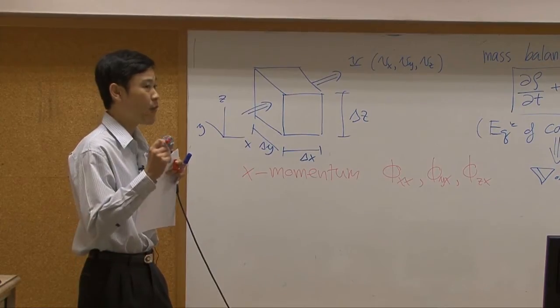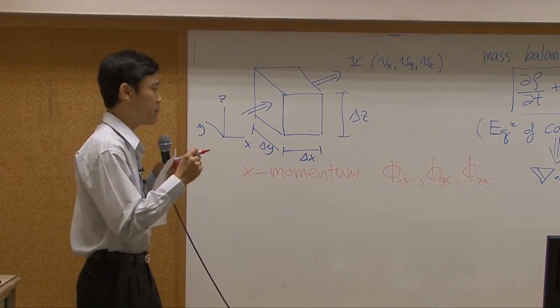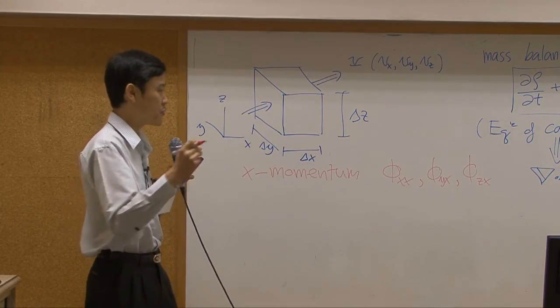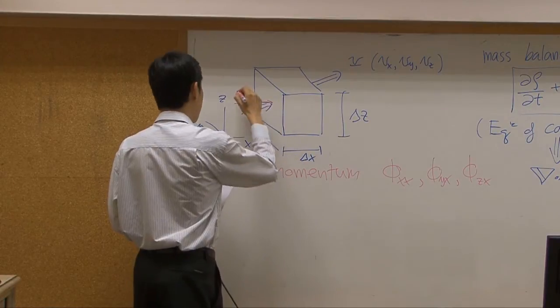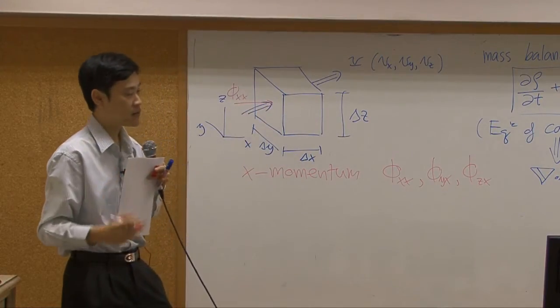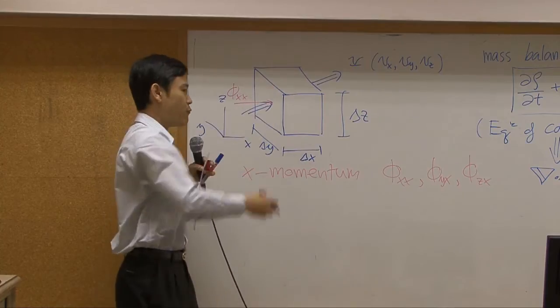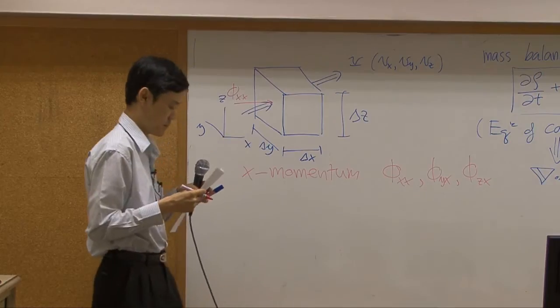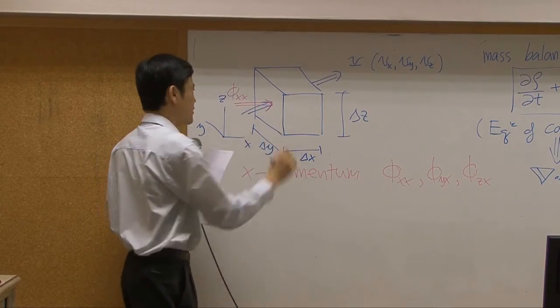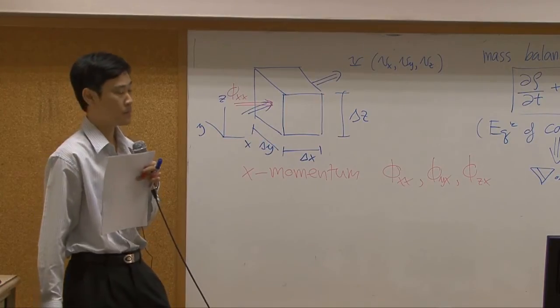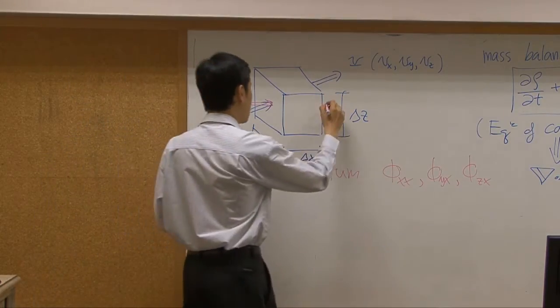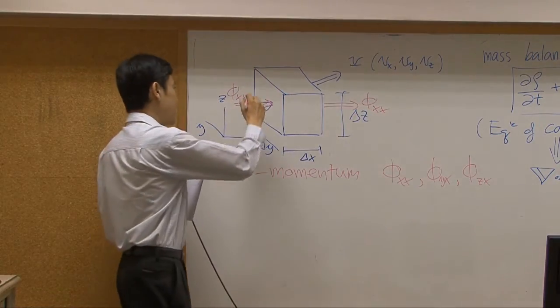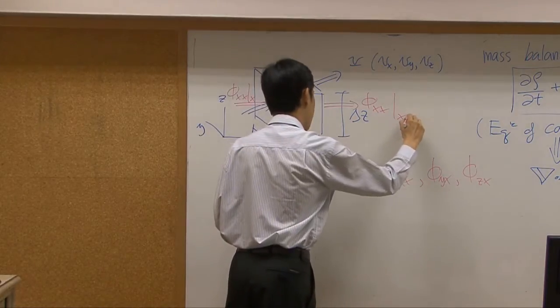Phi xx will be x momentum transfer in x direction. Phi yx will be x momentum transfer in y direction. And phi zx will be x momentum transfer in z direction, respectively. Now, can you write down direction of momentum transfer in this picture? For sure, phi xx is supposed to go in this direction. Perpendicular to y z plane. It's transfer in x direction. And I like to use double arrow here to signify the direction of transfer.